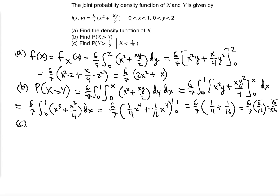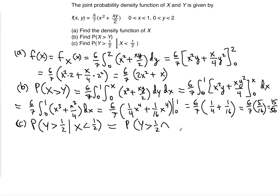Part c is a little harder. We need to find the probability that y exceeds 1/2 given that x is less than 1/2. Using the conditional probability formula, this equals P(Y > 1/2 and X < 1/2) divided by P(X < 1/2).